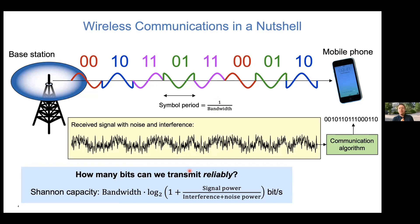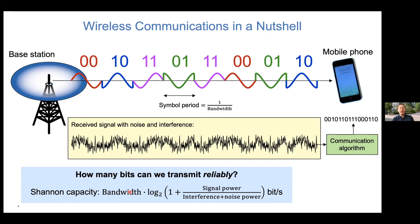How many bits can we transmit reliably? There is something called channel capacity that tells us how many options per symbol period to choose in order to transmit as much information as possible reliably. The formula - which I'll come back to - is essentially the bandwidth, which is the number of symbols per second, multiplied with a logarithm base two, and then one plus the signal power reaching the receiver divided by the interference plus the noise power. This tells us how many bits per second we can transmit.